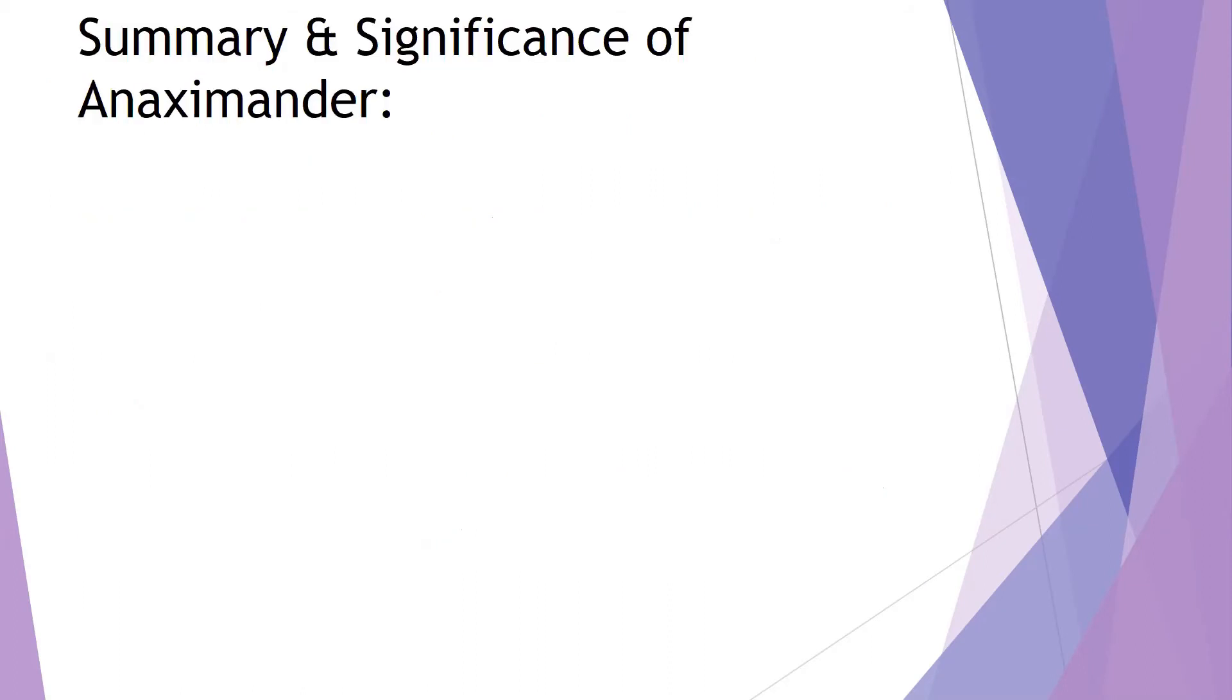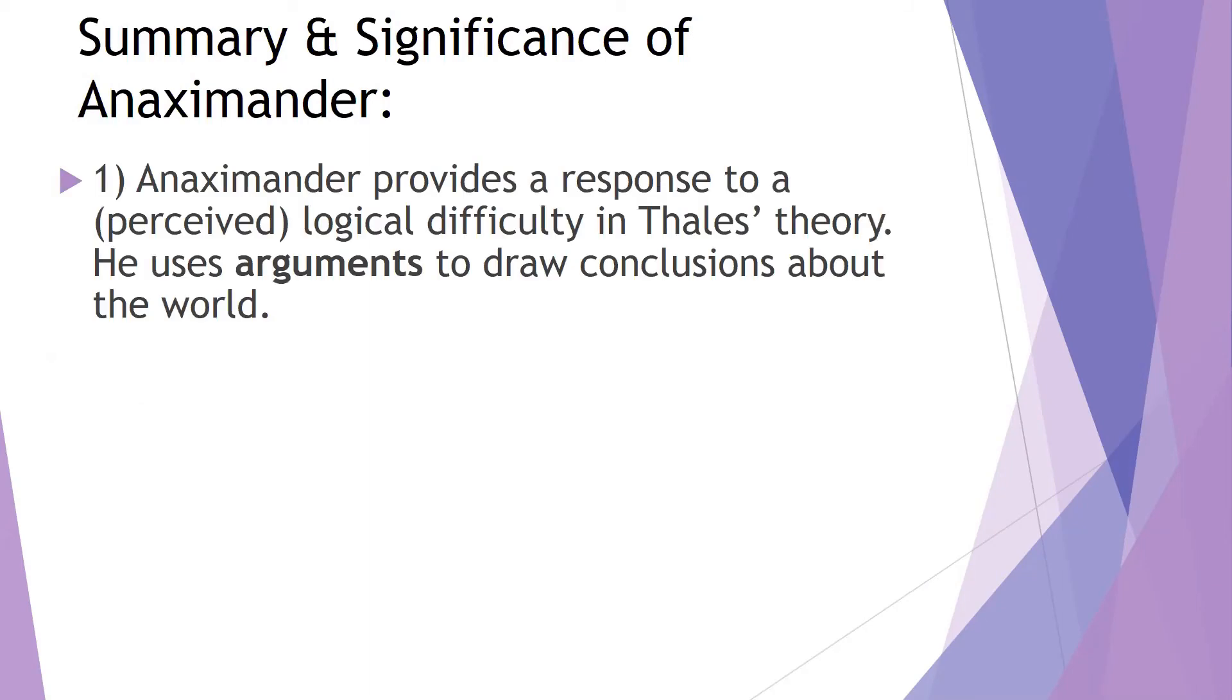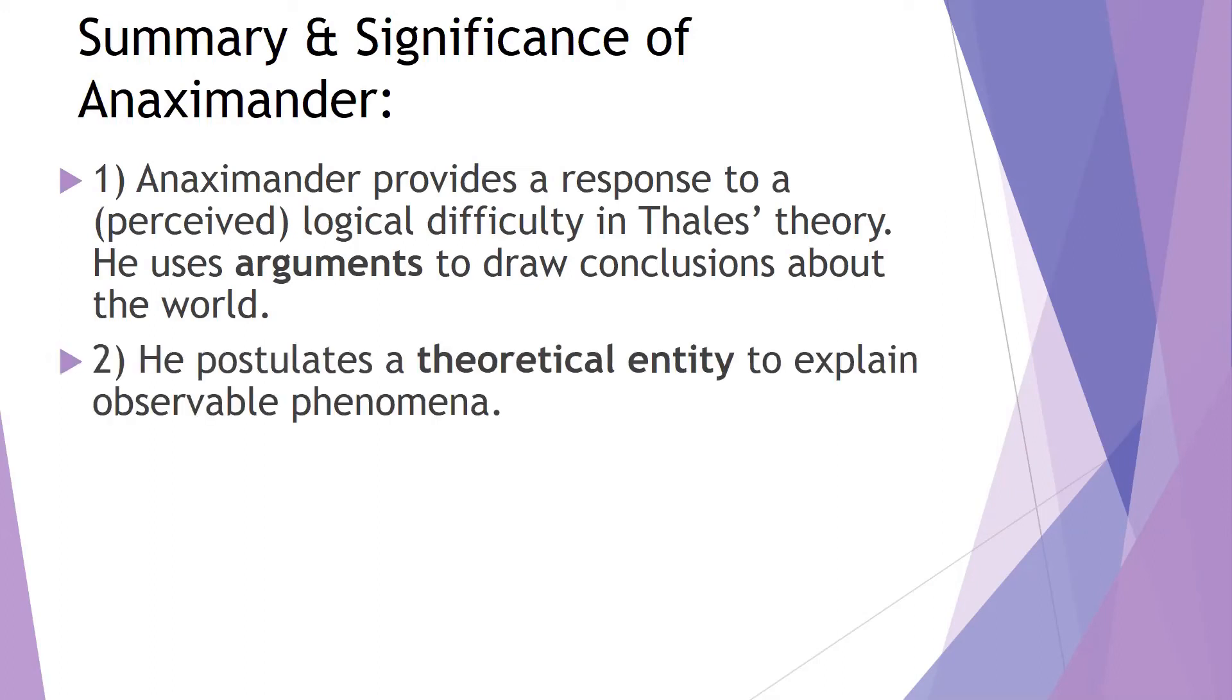Okay, so let's wrap it up. What's the significance of Anaximander? What should we say he accomplished? What did he provide for us? Well, one thing that he did is he provided a response to the perceived logical difficulty in Thales theory. So we had this concern with Thales, if everything's water, how do you get something like fire or heat or dryness? And he uses arguments to draw conclusions about the world. He's being rational in his inquiry. And that's providing a model then, of course, for the philosophers who follow after him.